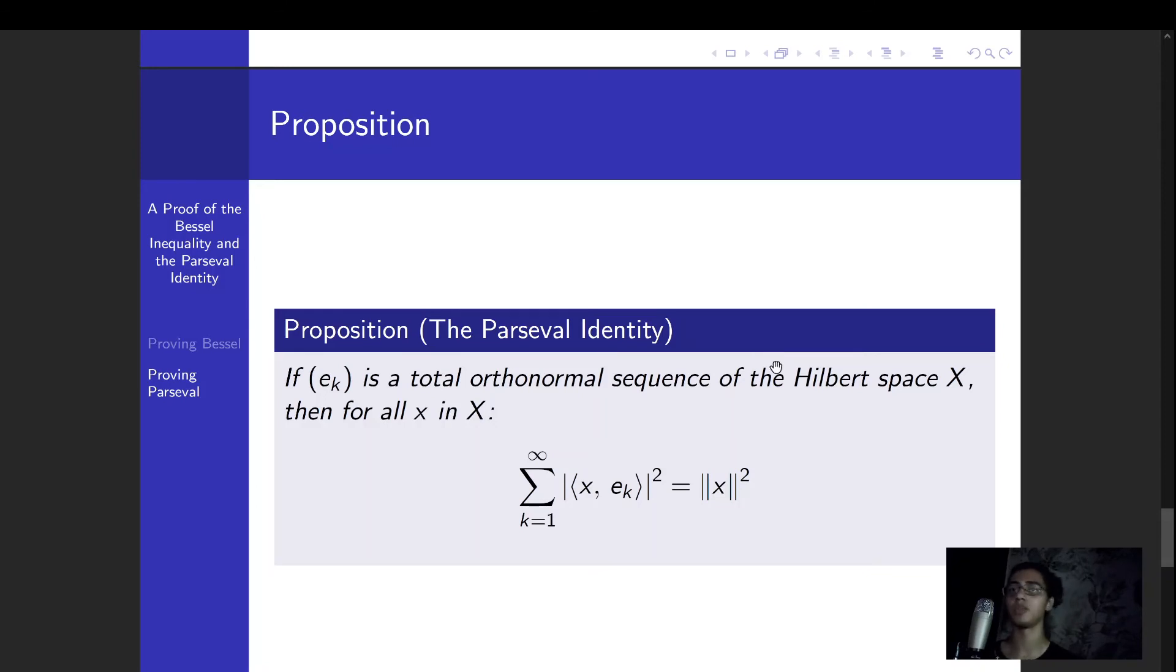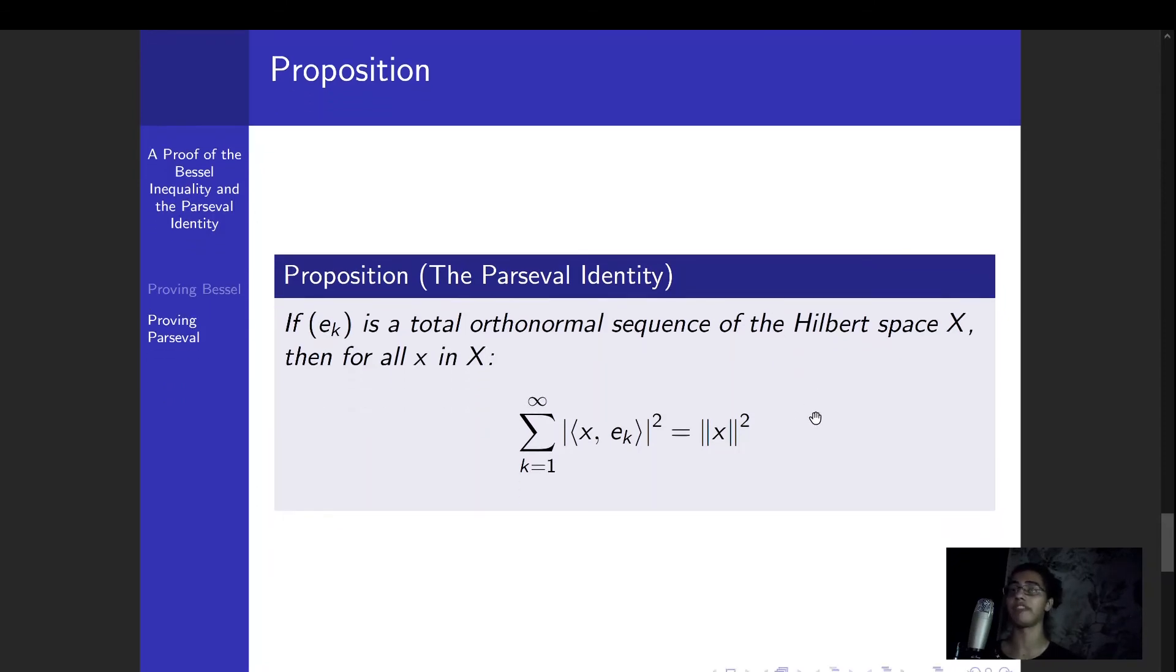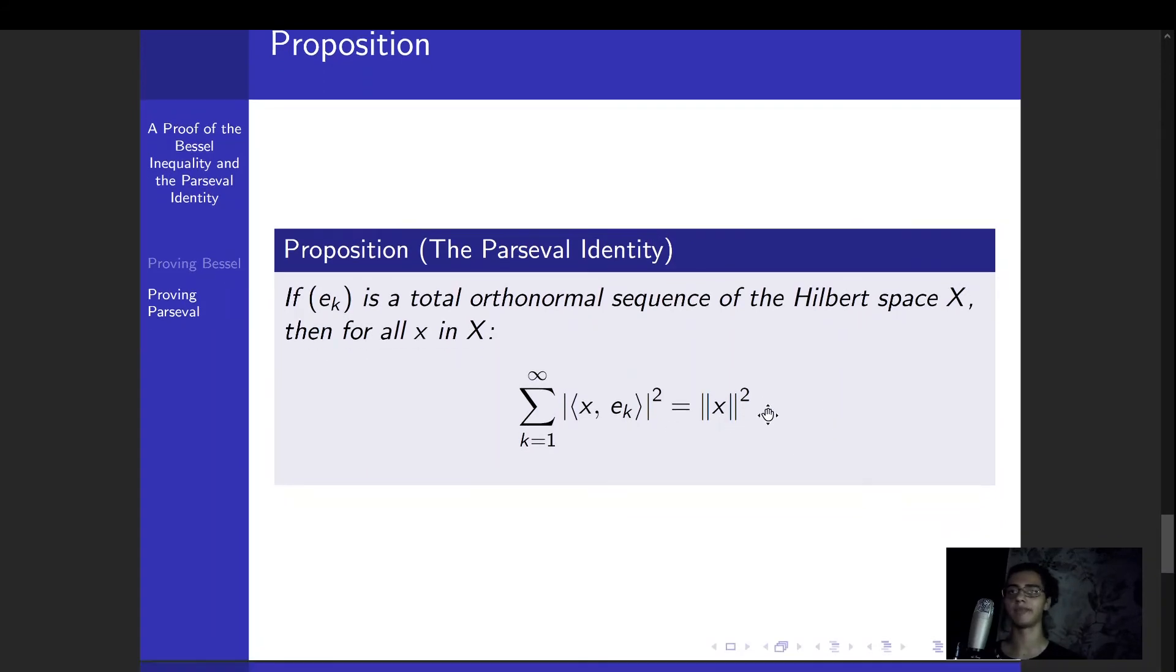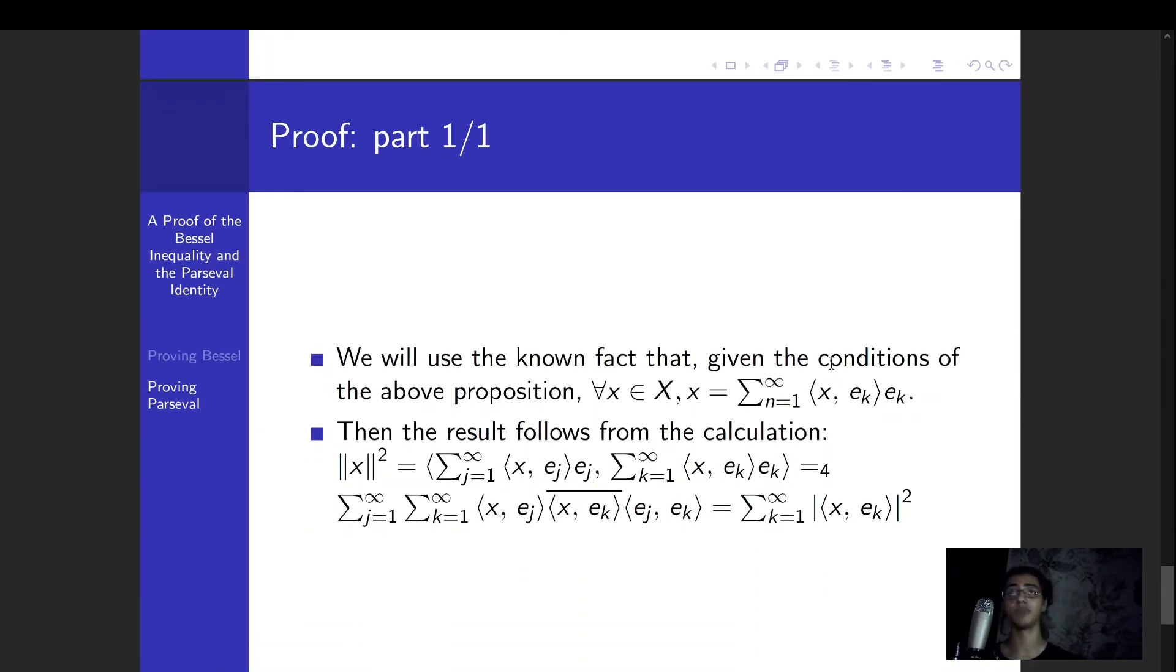So we only have those two additional assumptions, and we get for all x in X equality of the Bessel inequality, which is pretty amazing. And the more amazing part is the proof is even shorter than for the Bessel inequality.